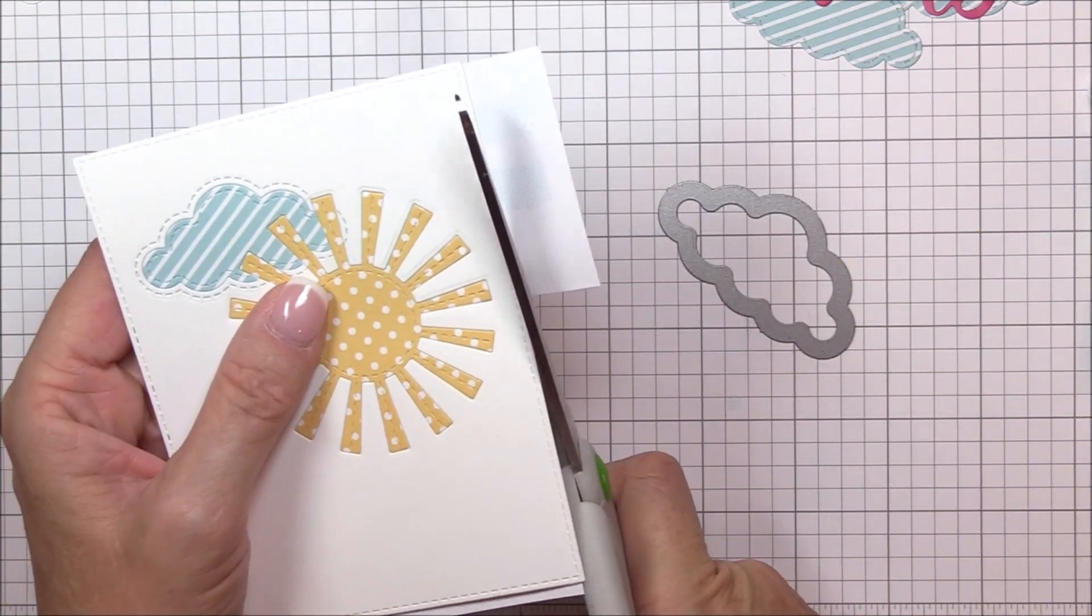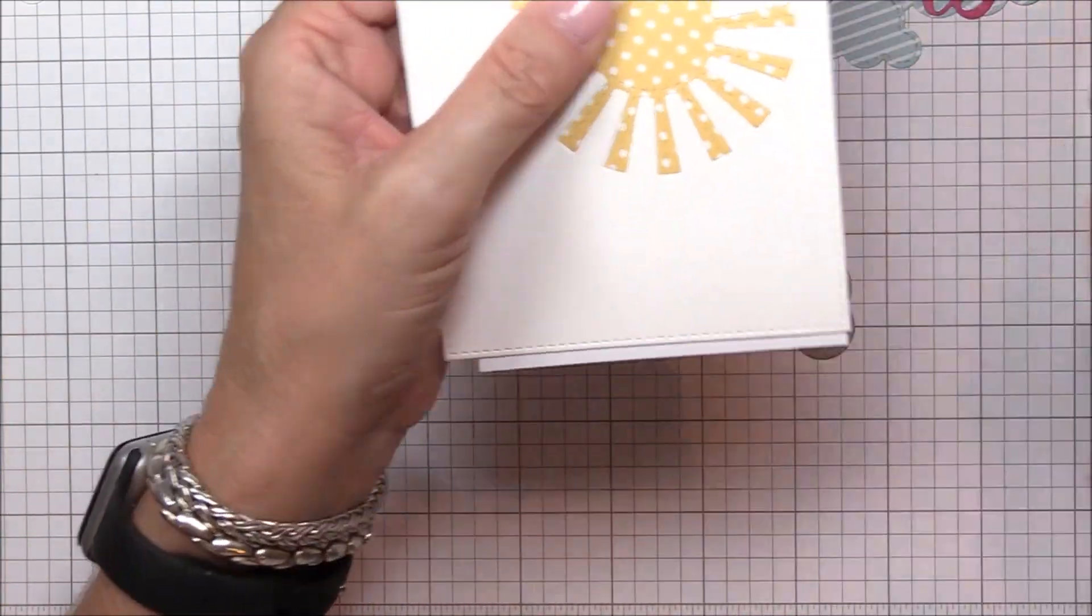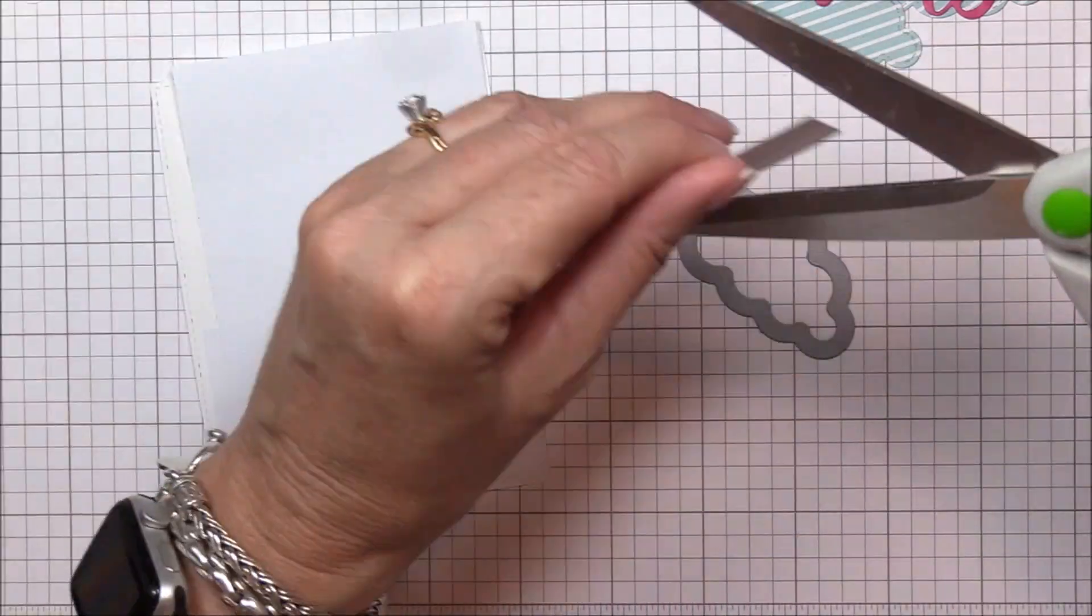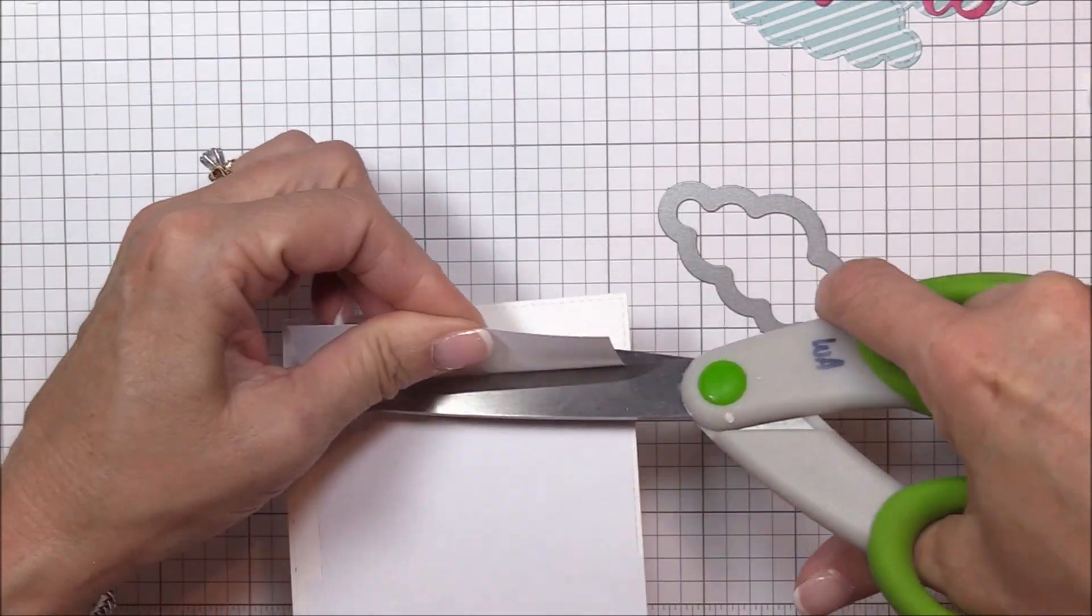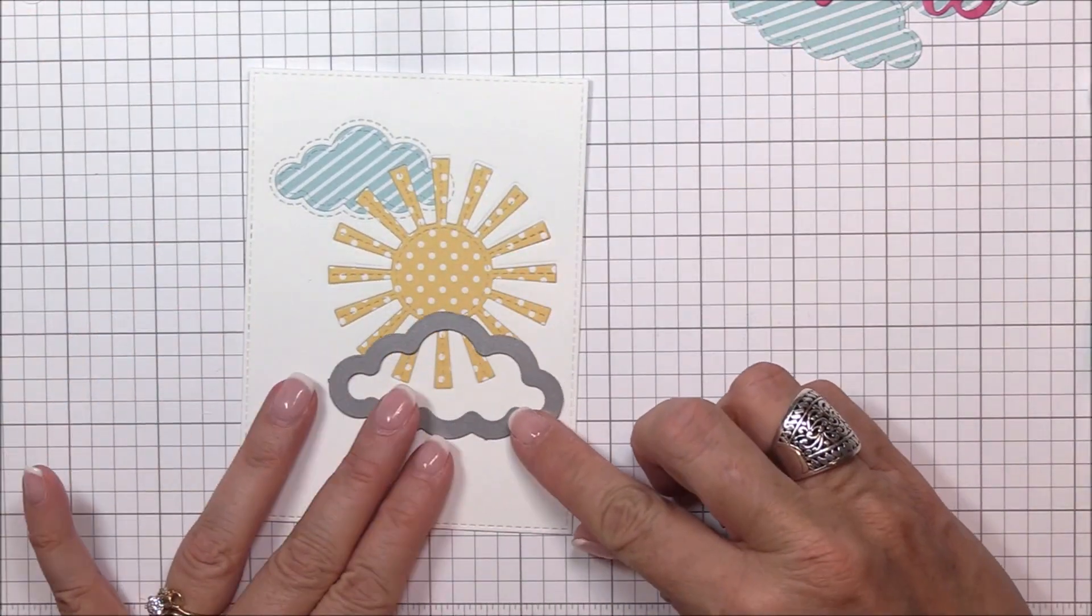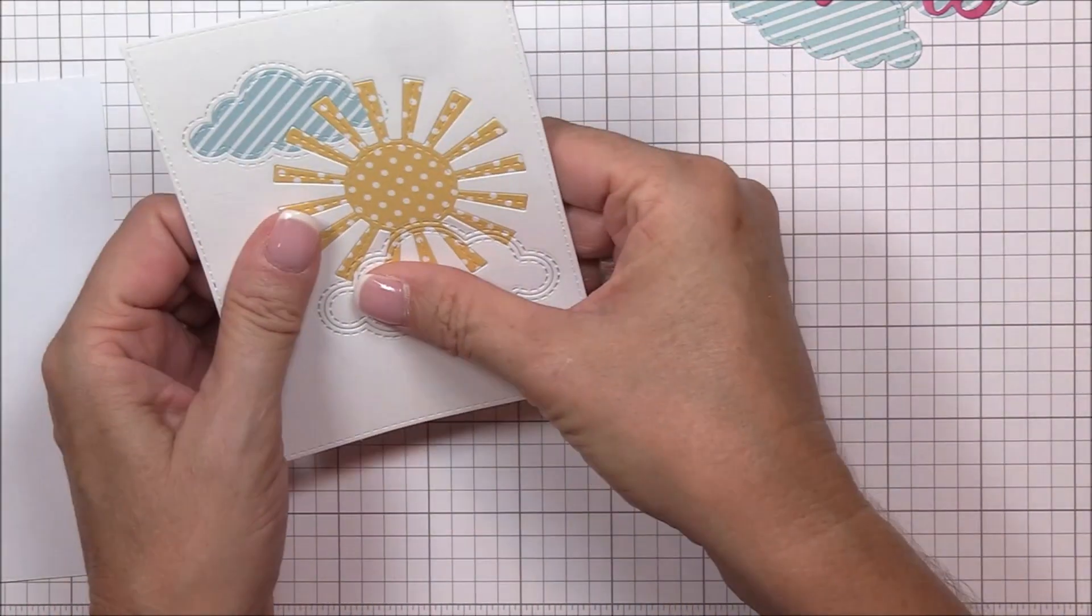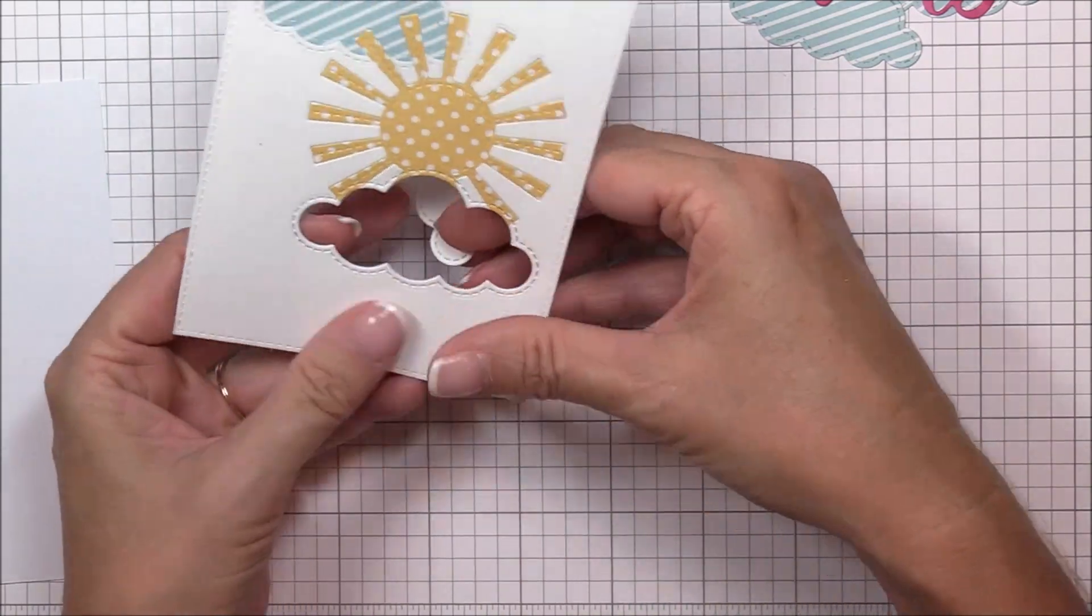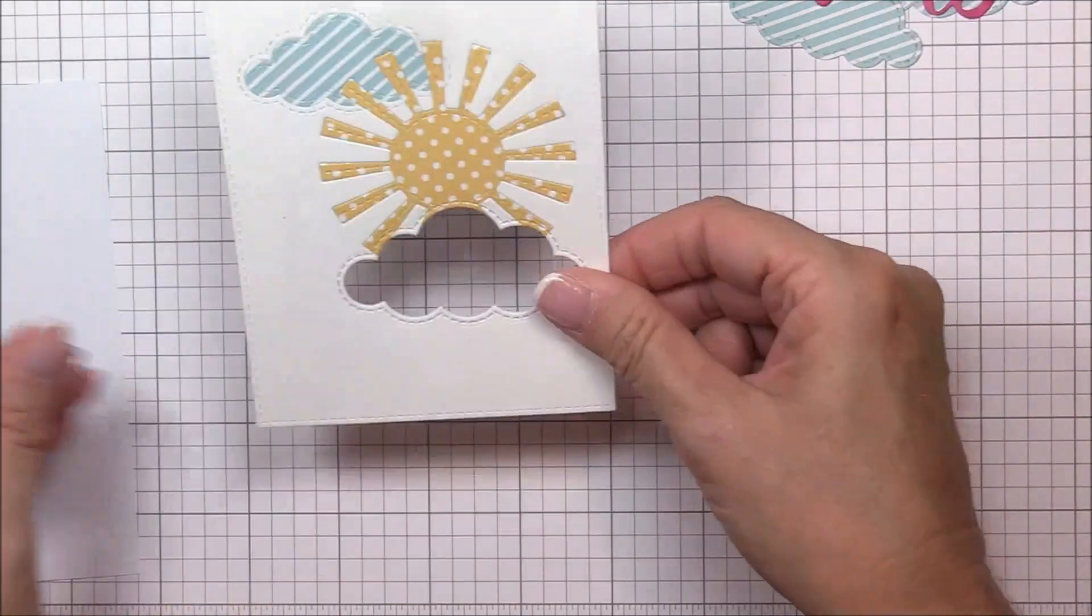Now I need to die cut the next cloud from the image panel. I lay it on top of the sunshine and die cut it off camera. Then I'll remove the negative of that cloud, adhere the sticky printer paper behind the aperture, and place the second cloud die cut in place, making sure to trim off the excess printer paper.